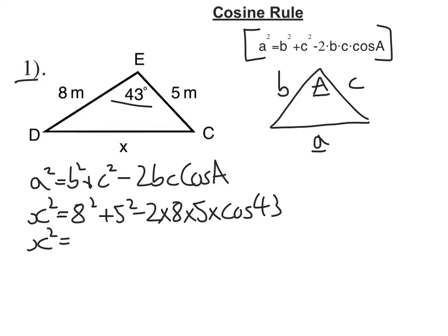Now you can put that all into your calculator in one go. And that will give you 30.4917. I want to square root that. And if I square root that, I get 5.52193. And if I do that to three significant figures, I get 5.52 metres. And that's the cosine rule.